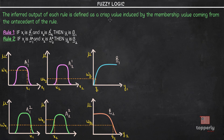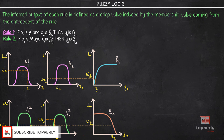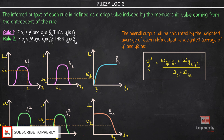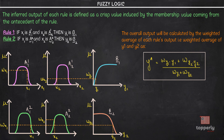That is what I meant by the above statement — the inferred output of each rule is defined as a crisp value, which is y1 and y2 in this case, and this is induced by a membership value, which is wy1 and wy2, coming from the antecedent of the rule. After this, we obtain our overall output calculated by the weighted average of each rule's output. The overall output y* is given as: y* = (wy1 × y1 + wy2 × y2) / (wy1 + wy2), where wy1 and wy2 are the corresponding membership values of y1 and y2.